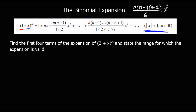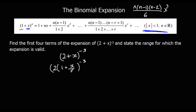Let's have a look at an example. We've got (2 + x)^(−3). This has got a 2 inside the bracket, but we need it to be a 1 inside the bracket. So we're going to factorise out the 2. If I factorise out 2 from the bracket, I'll have 2 on the outside and then (1 + x/2) inside. We're going to say we've got 2^(−3) times (1 + x/2)^(−3).